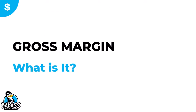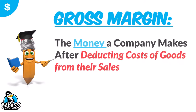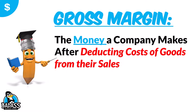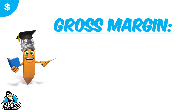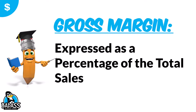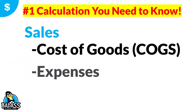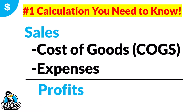What is gross margin in the first place? Well, gross margin is basically the money a company makes after deducting its cost of goods from their sales — basically before any other expenses are paid. It's important to understand that gross margin is expressed as a percentage of total sales. The biggest thing to remember is that it's your sales minus your cost of goods.